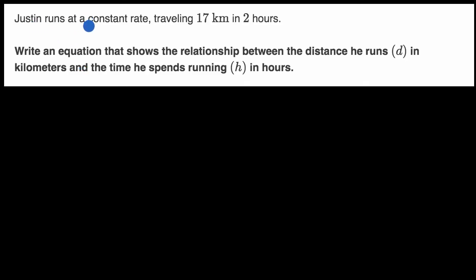We're told that Justin runs at a constant rate, traveling 17 kilometers in two hours. Write an equation that shows the relationship between the distance he runs, D, in kilometers and the time he spends running, H, in hours.